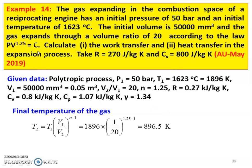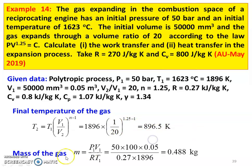For the polytropic process, final temperature T2 = T1 × (V1/V2)^(N−1) = 1896 × (1/20)^(1.25−1) = 896.5 K. Mass of gas from the perfect gas equation: M = P1V1 / (RT1) = (50 × 100 × 0.05) / (0.27 × 1896) = 0.488 kg.